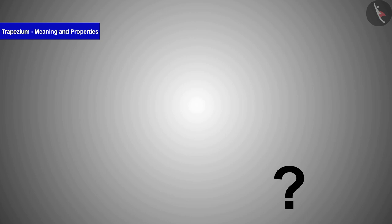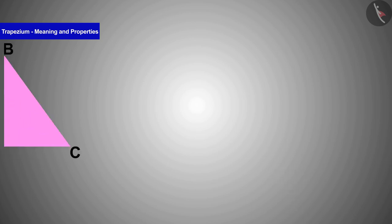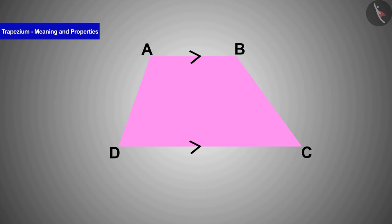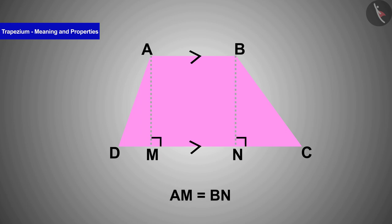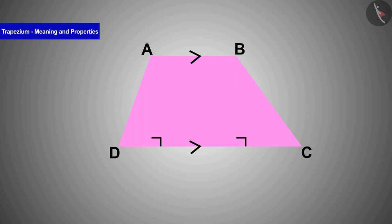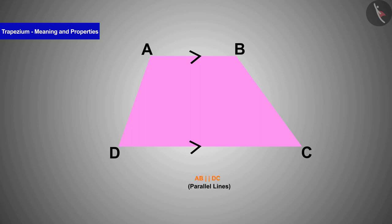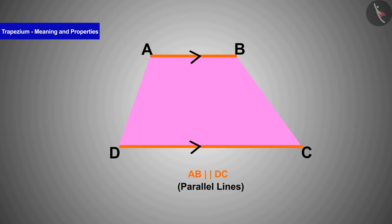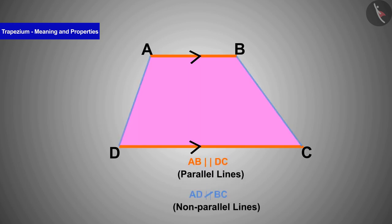Let's see how we call them parallel. If we draw the perpendicular from the vertices of the shorter parallel side, we will see that these perpendiculars are of equal length — that is, they have the same length — which is why this shape is called a trapezium. In this figure, one pair of sides is parallel and the other pair is non-parallel.